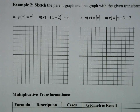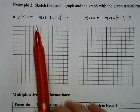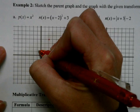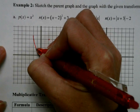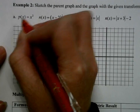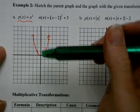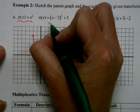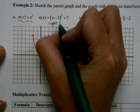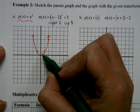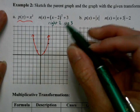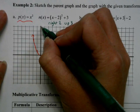We're going to apply multiple additive transformations to a function. First, I'm going to graph x squared — there's what the parabola looks like. Then I'll graph the transformation x minus 2 squared plus 3. This is going to go to the right 2 and up 3. So my vertex, rather than being at the origin, is going to go over to the right 2 and up 3, and then my graph will follow from there.